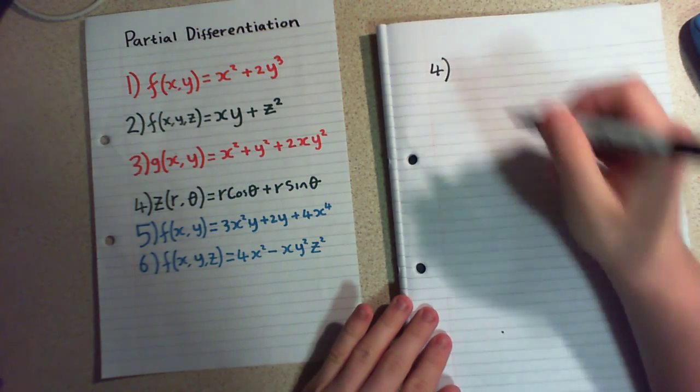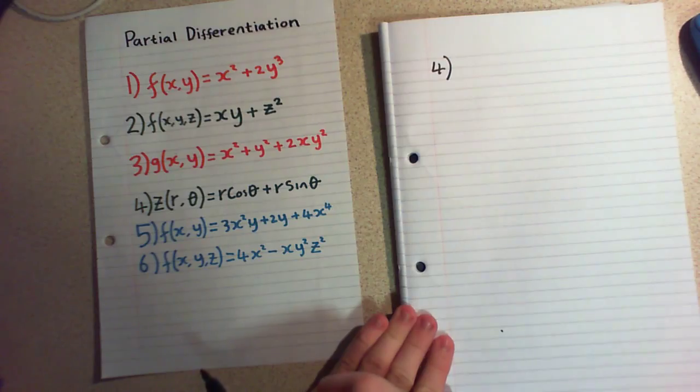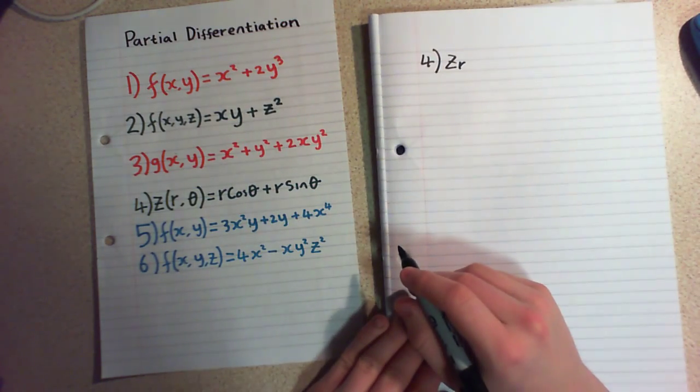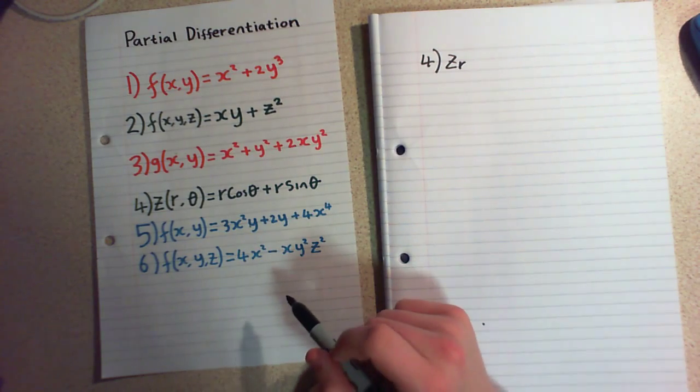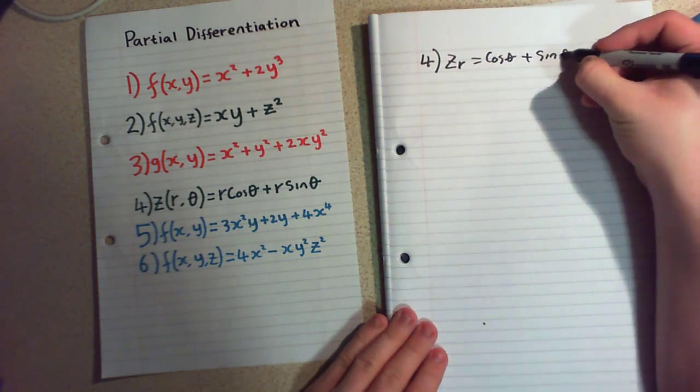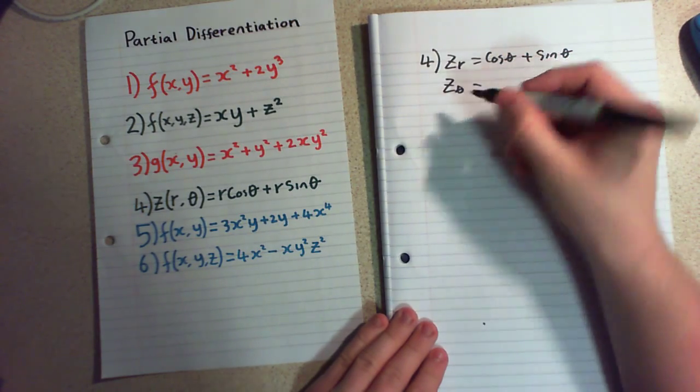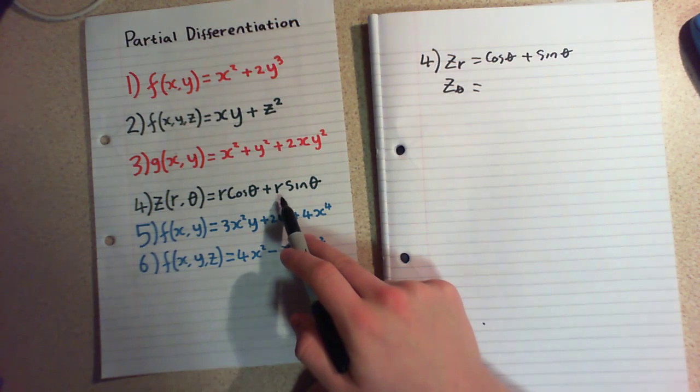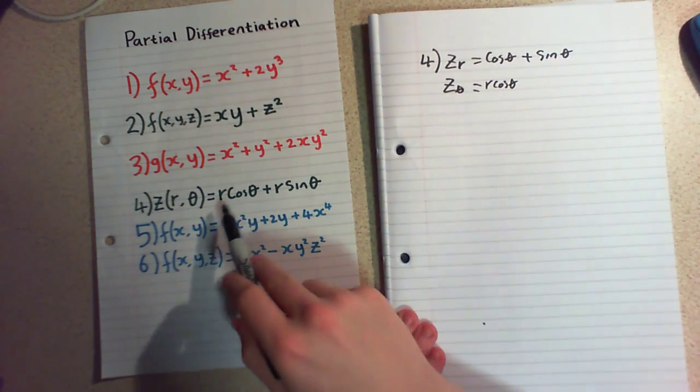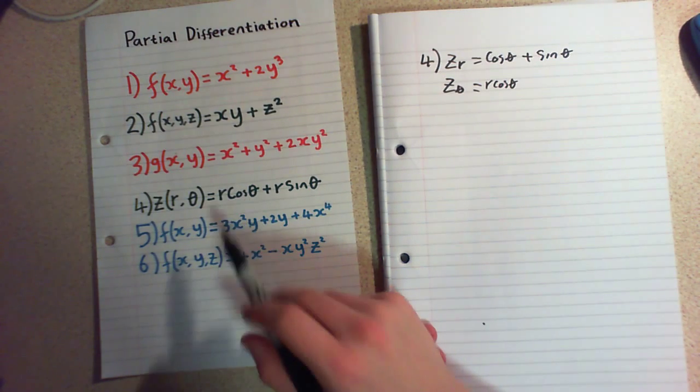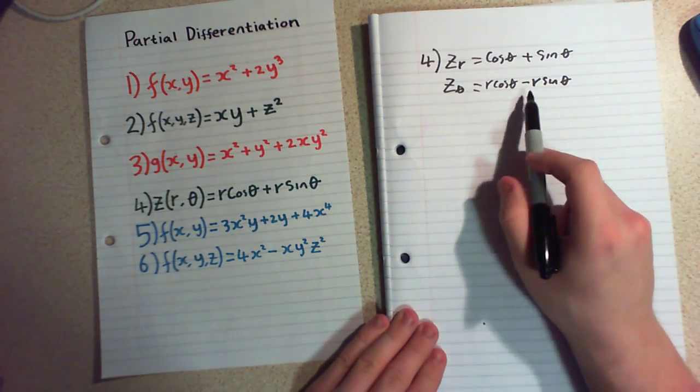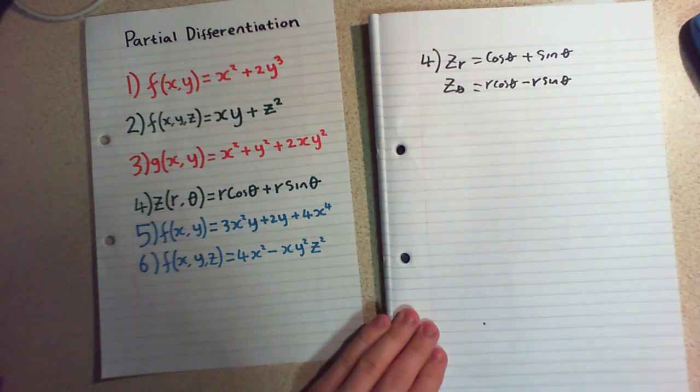For problem 4 then. Now this is of r and theta. And what we're going to do is we're going to treat r first. So z of r. And now our cosine and our sine are both constants. So we're just left with cos θ plus sin θ. And if we just do it with respect to theta. I'm going to treat, do this side first. So r is our constant and sine goes to cosine. So this is r cos θ. And then I do the other side. And I did it this way around and you'll see why. Because cosine goes to minus sine. So we're left with minus r sin θ. I did it this way around so we don't have to write minus and a plus as well. It's just a nicer way to write it.